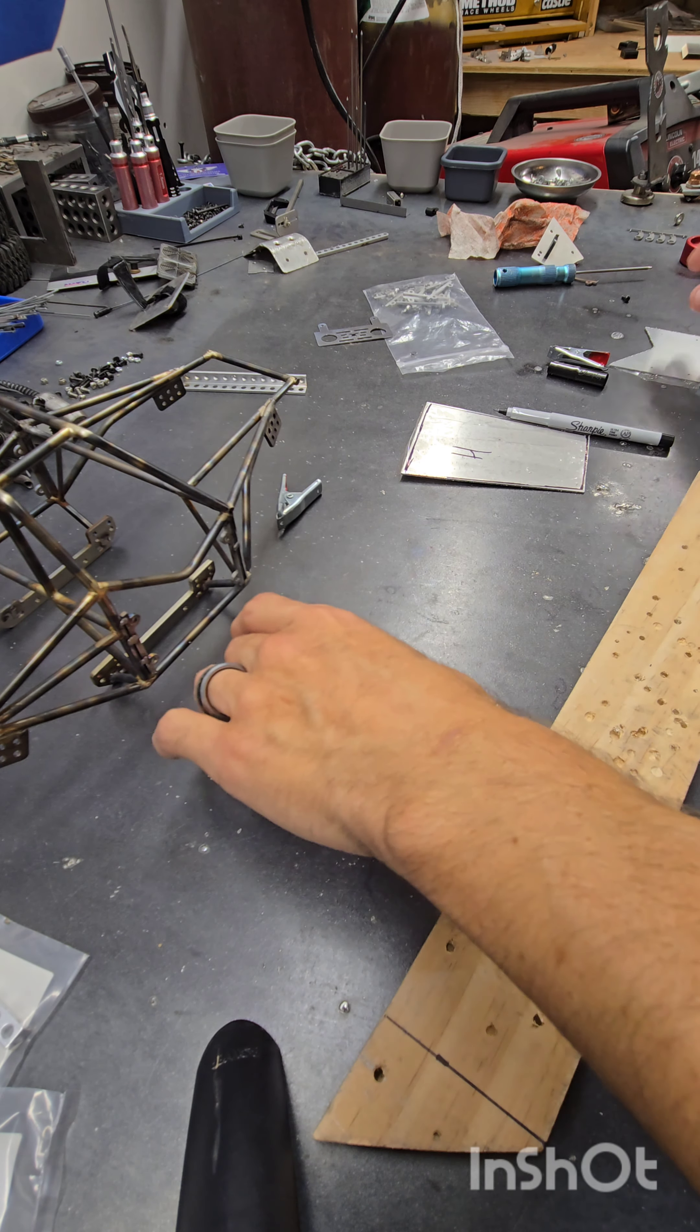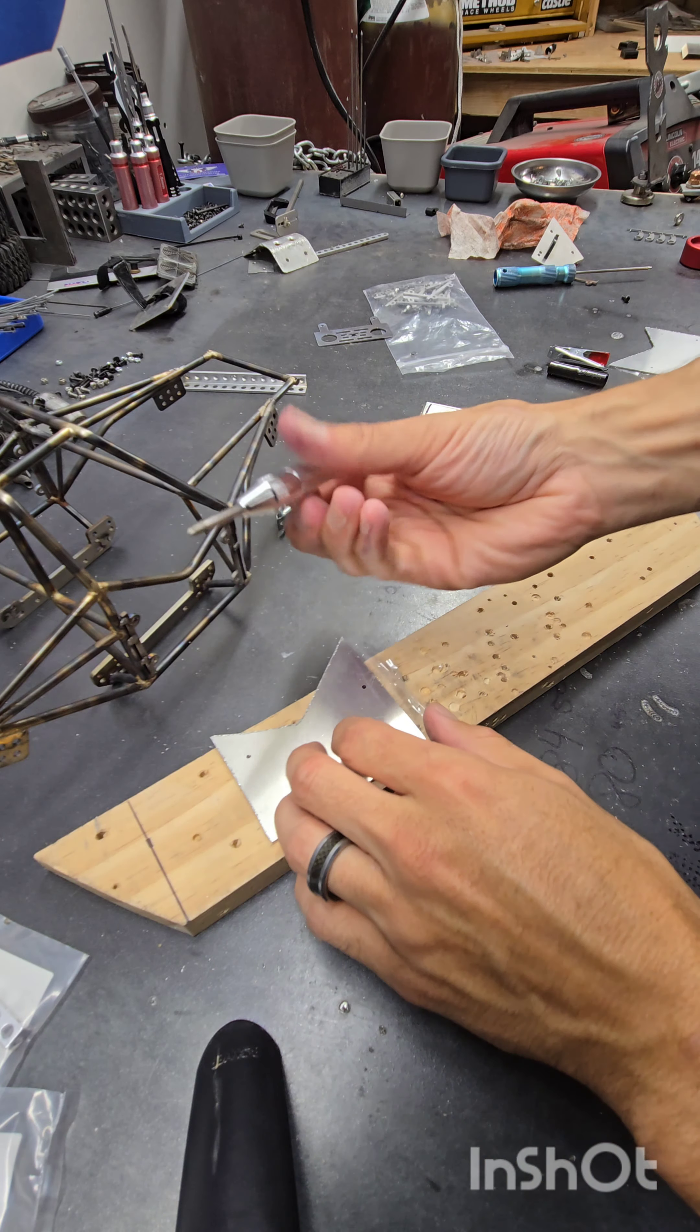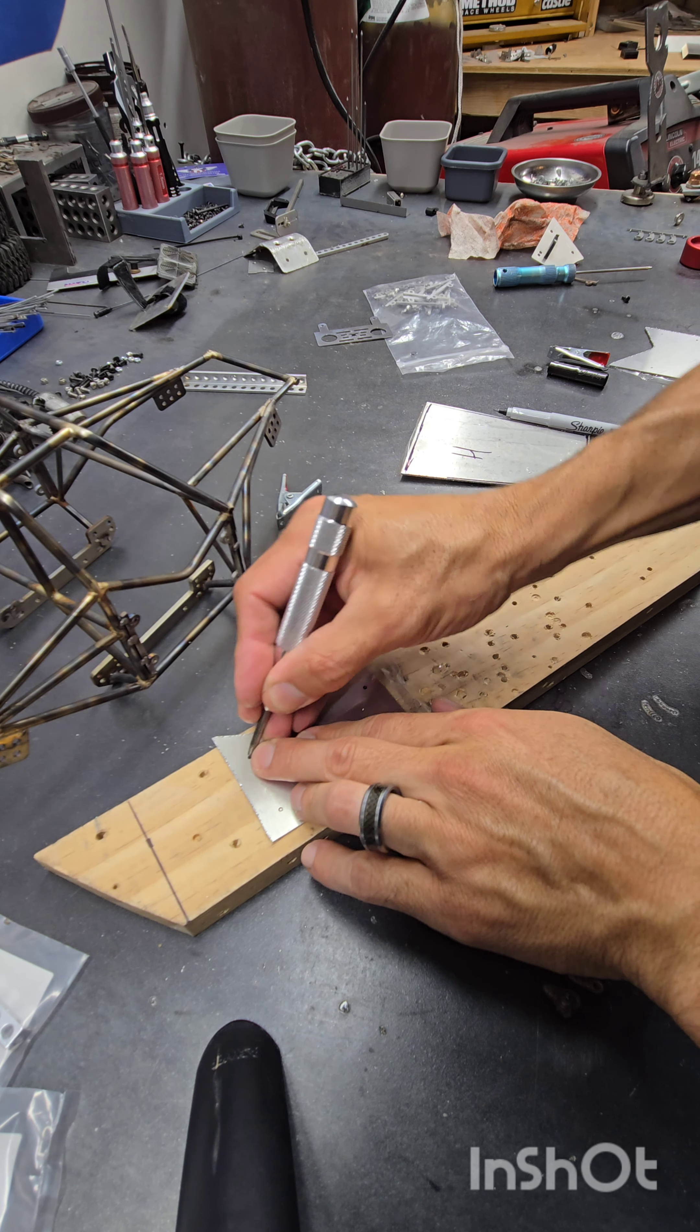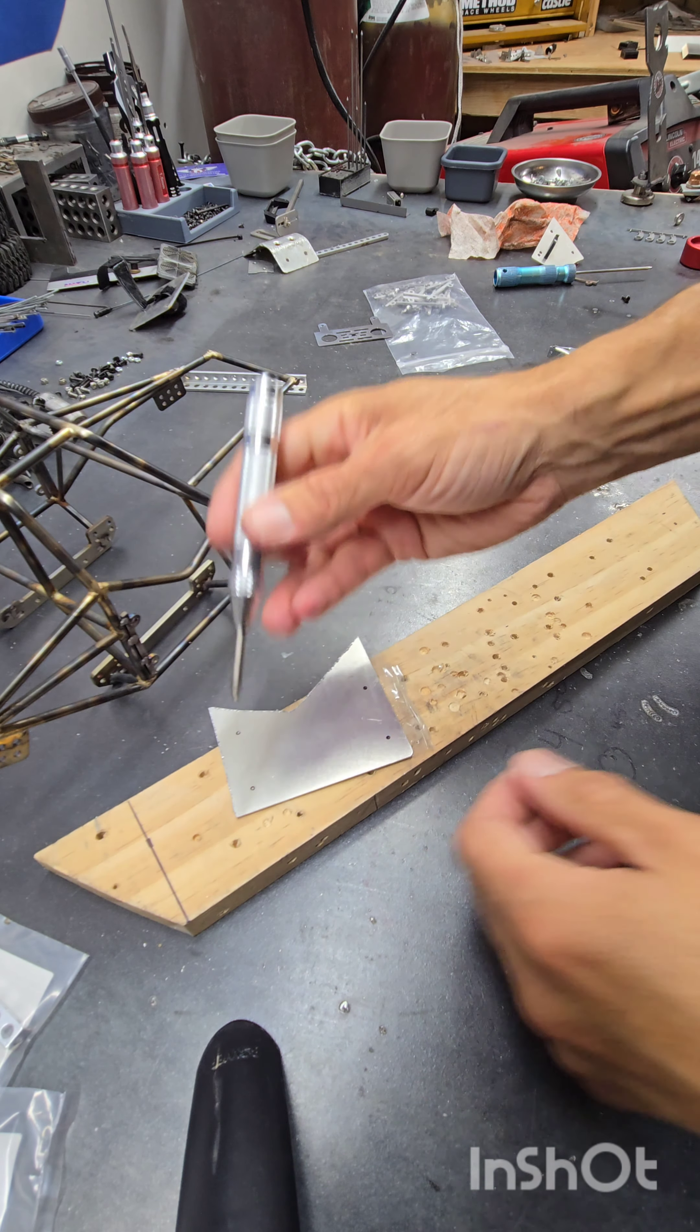Once all your holes are marked, it's time to break out the center punch. I like to use a spoiler board. Keeps things a little bit tidier and less likely to damage the panel.